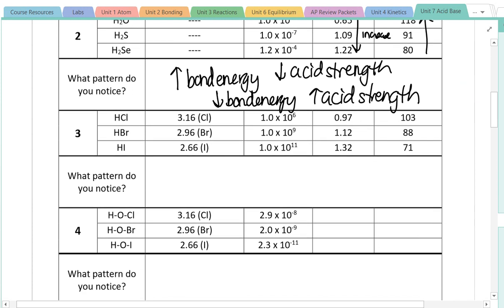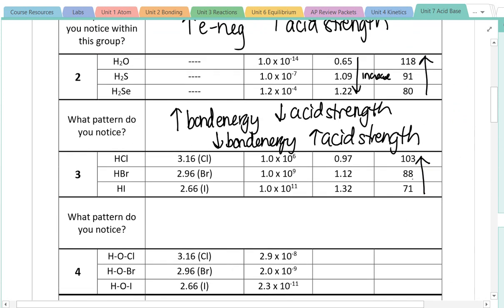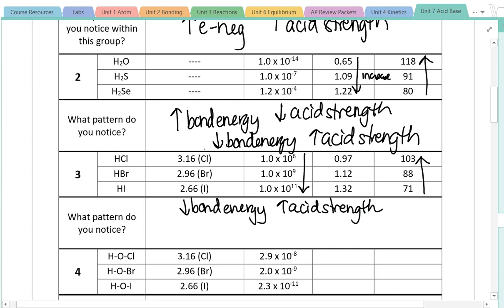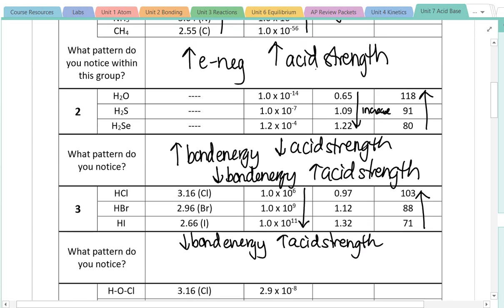In this next group, as bond energy increases we again see an inverse relationship with acid strength — the lower the bond energy, the greater the acid strength. But our previous electronegativity pattern is not holding true here. Within this grouping, the atom with the greater electronegativity, chlorine, is actually the weakest acid in this group. So it seems like we need to consider both variables — both electronegativity and bond energy — when we're trying to predict acid strength.